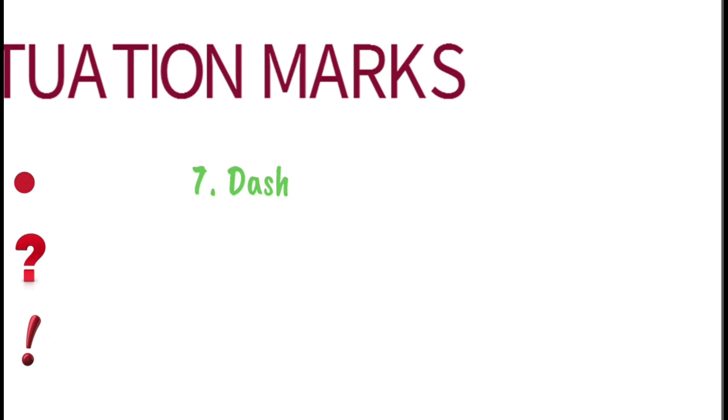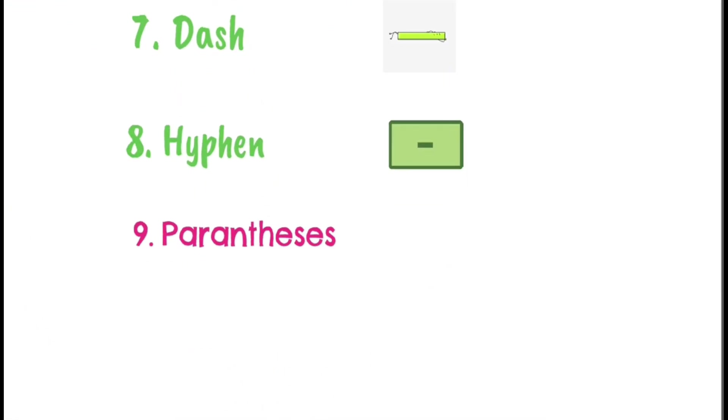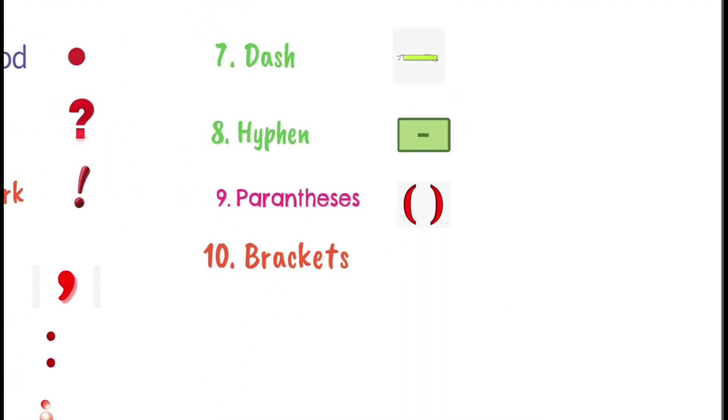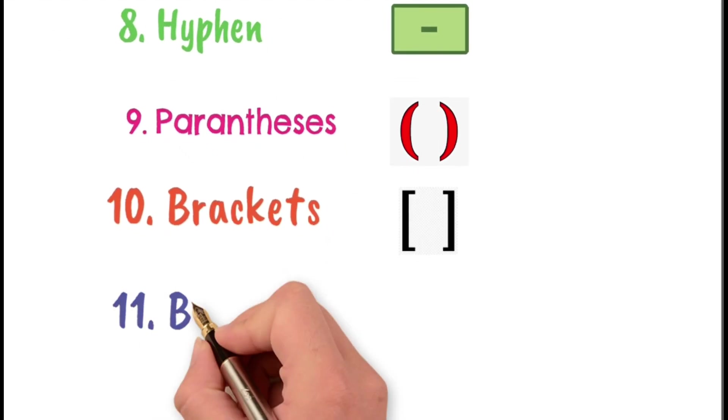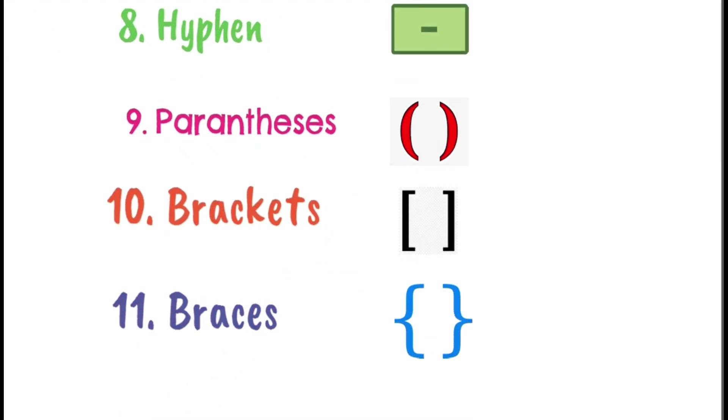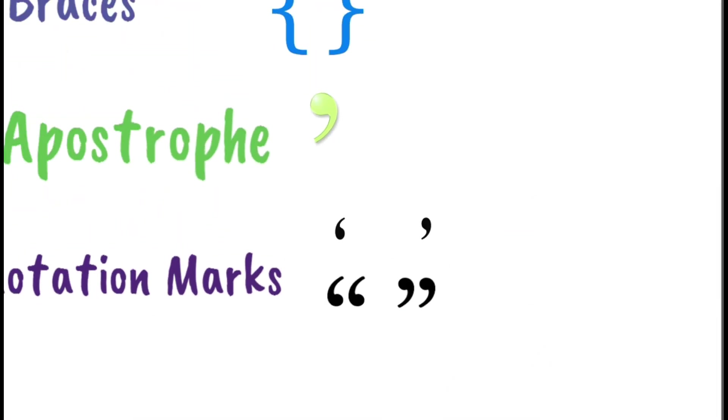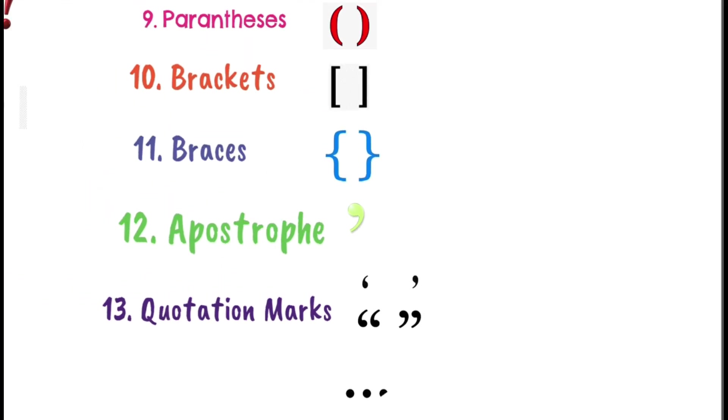Seventh is dash. There are two types of dash: N dash and M dash. Eighth, the hyphen. Ninth, the parentheses. Tenth, the brackets. Eleventh, the braces. Twelve, the apostrophe. Thirteenth, the quotation marks. They can be single or double. Fourteenth, can you identify this symbol? The symbol of these three dots. This symbol is known as the ellipsis.